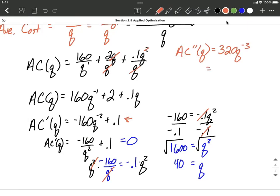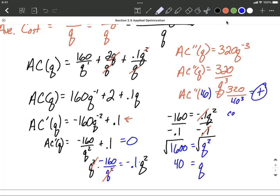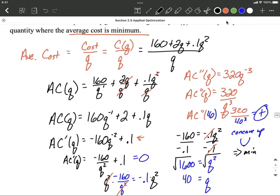This really means the same thing as 320 over Q to the positive third. Still our second derivative. So if we wanted to evaluate that at 40, we would say AC double prime of 40. It's going to get plugged in there. It's going to equal 320 divided by 40 cubed. Overall, this is going to be positive, and that's really all we care about is it's positive, which tells us our graph at 40 is concave up. Concave up graphs have this sort of look going to them, so they're going to have a minimum at that quantity.